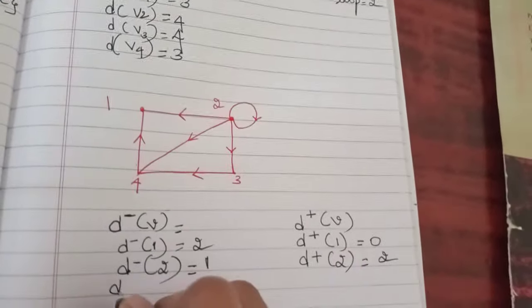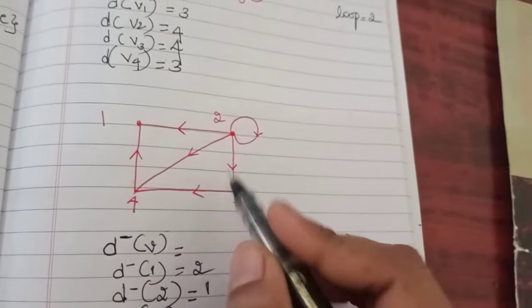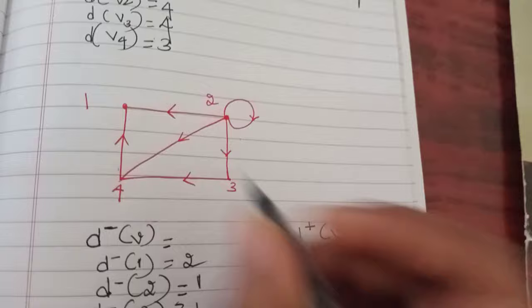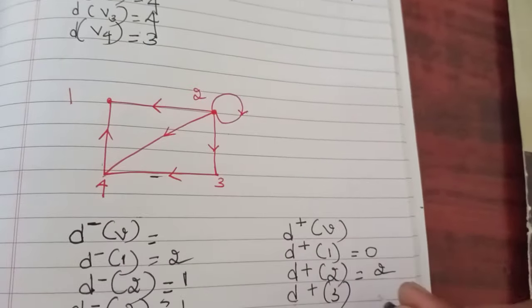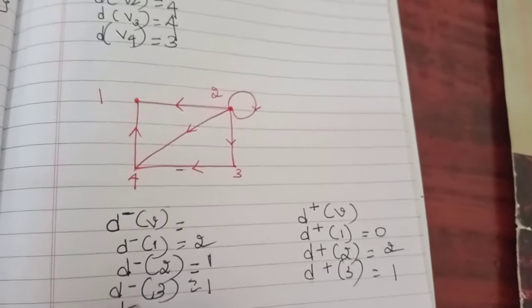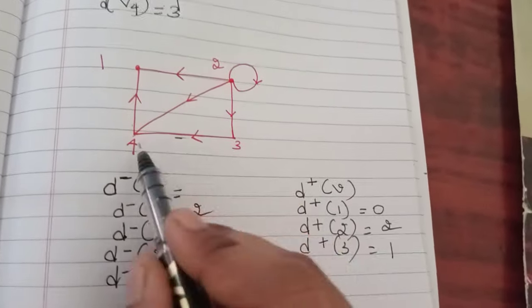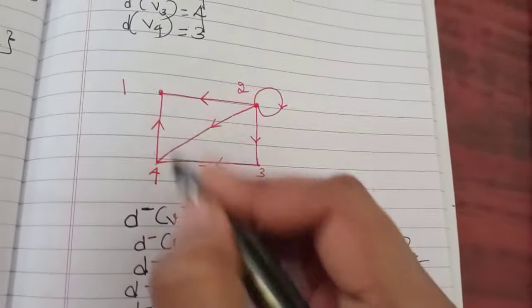For three, in-degree is one, out-degree is one. For in-degree of four, you have in-degree of four is one, out-degree of four is one.